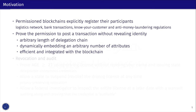Although joining a blockchain is not anonymous, posting a transaction can be. Anonymous credentials let parties prove that they are a part of a blockchain without revealing their identity. To this end, we would like to have a scheme that allows delegation, where a root authority delegates to an organization which further issues user credentials, supporting arbitrary lengths of delegation chain and embedding an arbitrary number of attributes along the way, such as the fact that the bearer is a member of an organization. Finally, such a scheme needs to be fast and easily natively integratable into the blockchain.